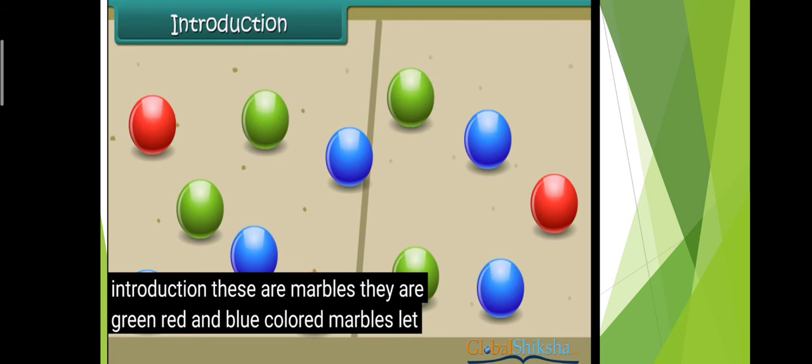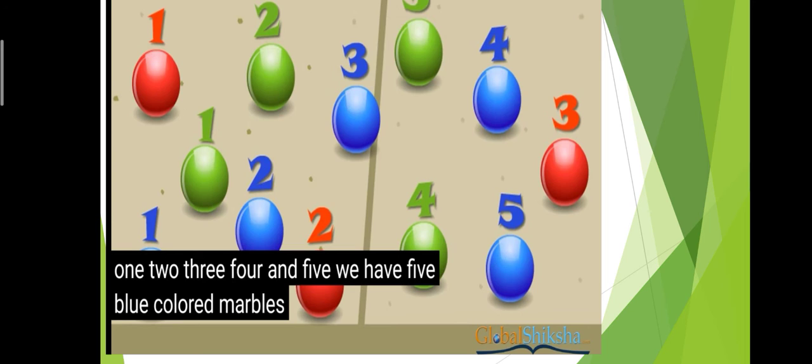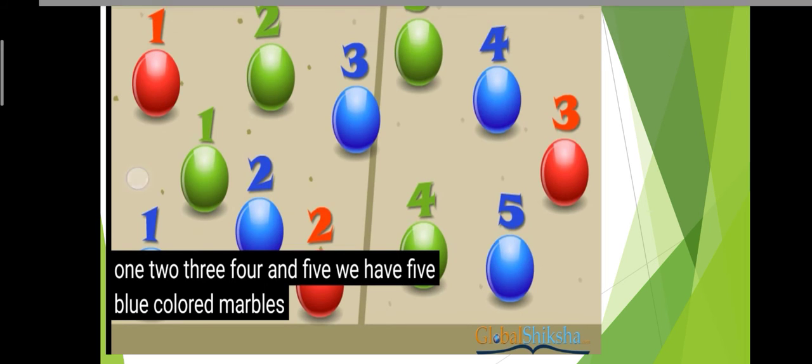These are marbles. They are green and blue colored marbles. Let's count the marbles. How many blue marbles? One, two, three, four, five blue marbles. How many green marbles? One, two, three, four green marbles. How many red marbles? One, two, three.